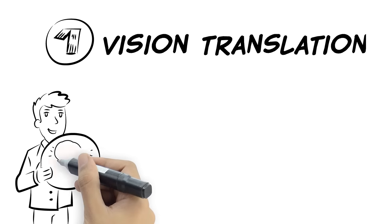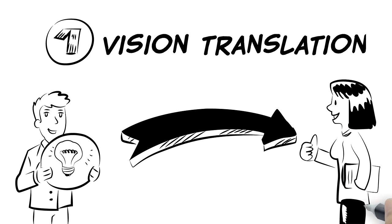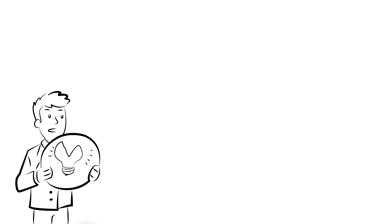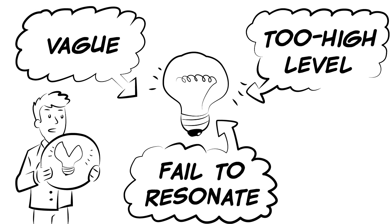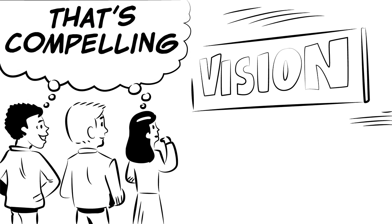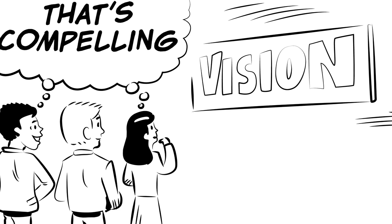The first is vision translation. It's impossible to align any group of people in the same direction if they don't know where they're headed. But many transformation efforts suffer from visions that are vague, too high level, or fail to resonate with employees. To drive EET, the vision of the future must be compelling and convey both extrinsic and intrinsic benefits for the people involved.